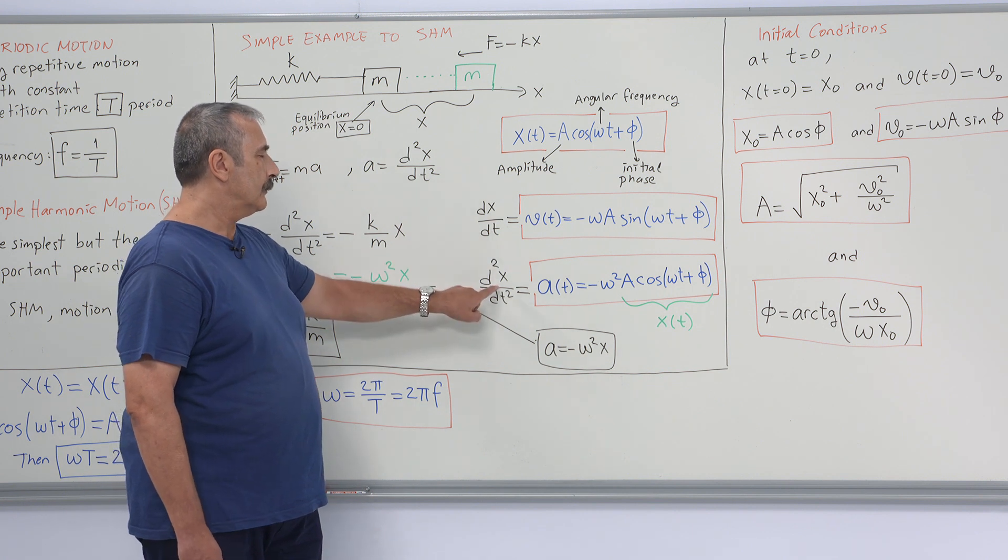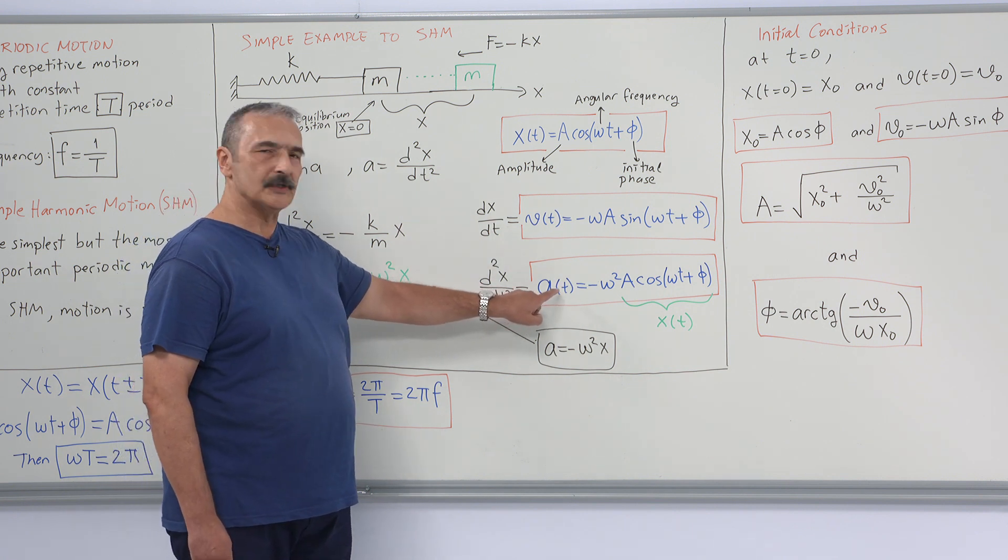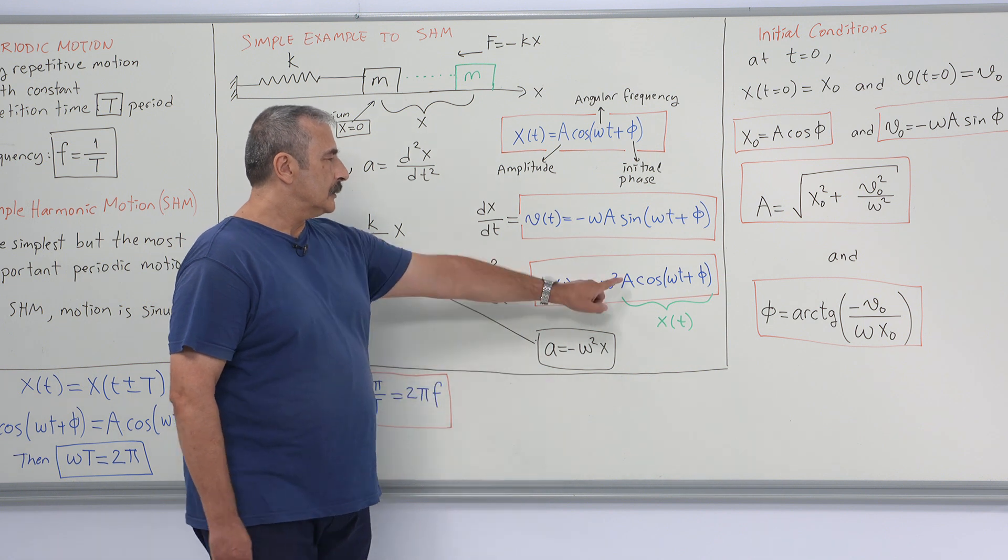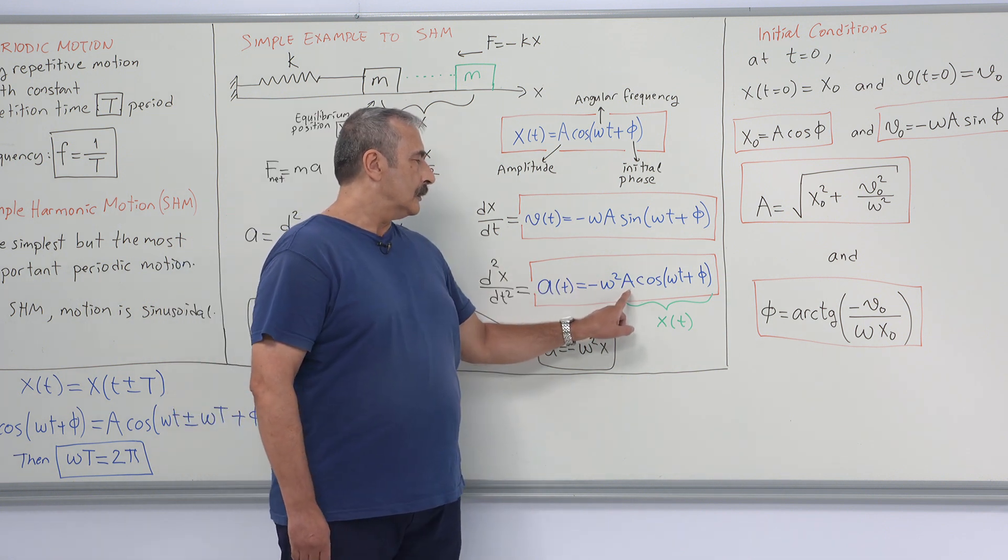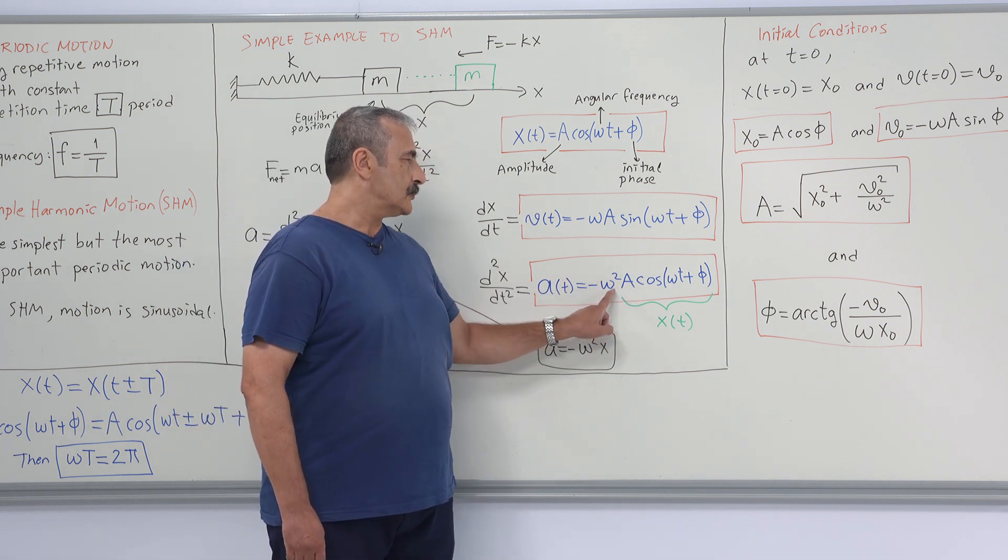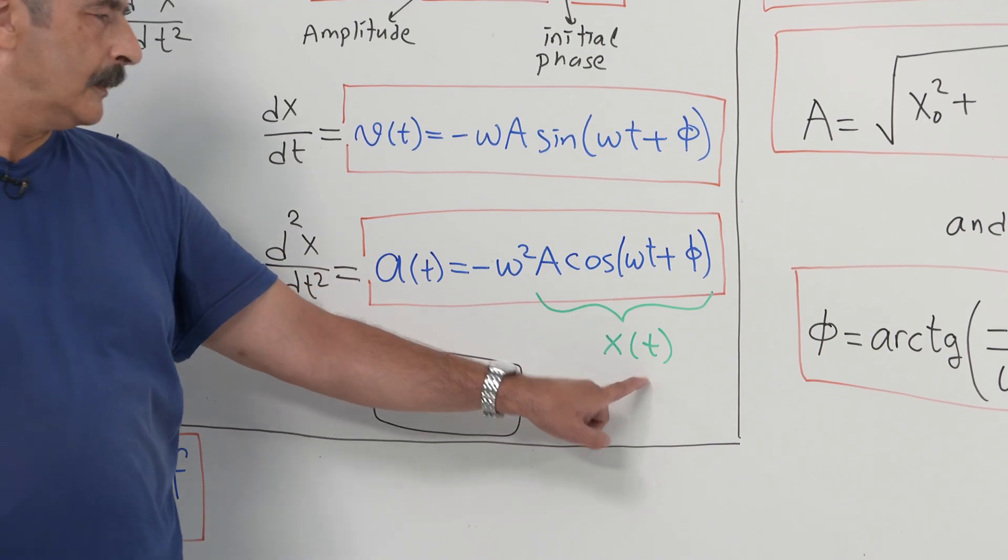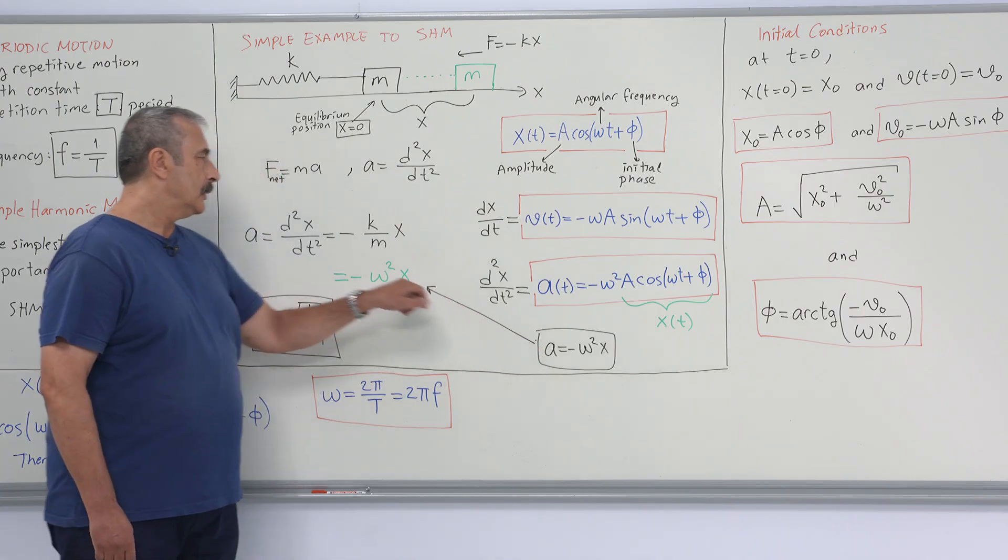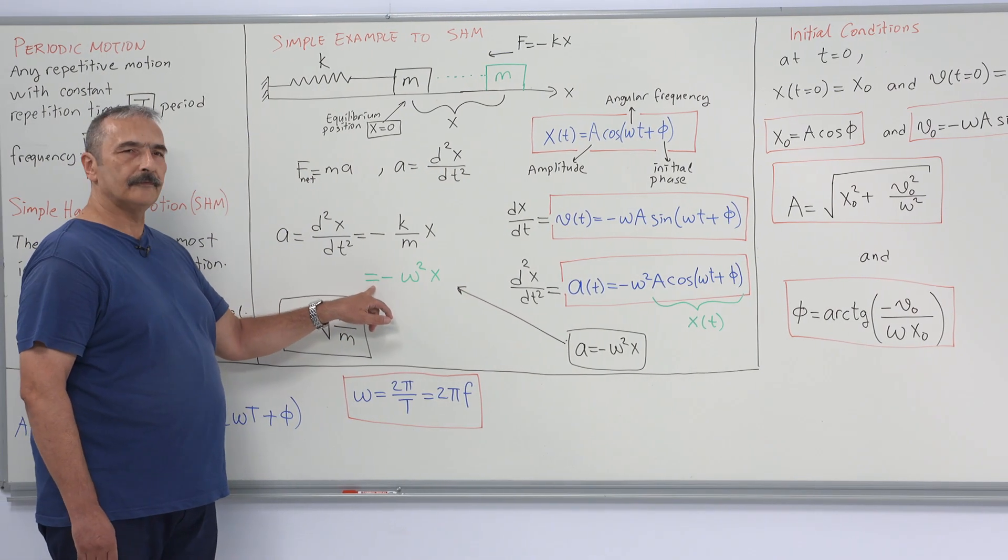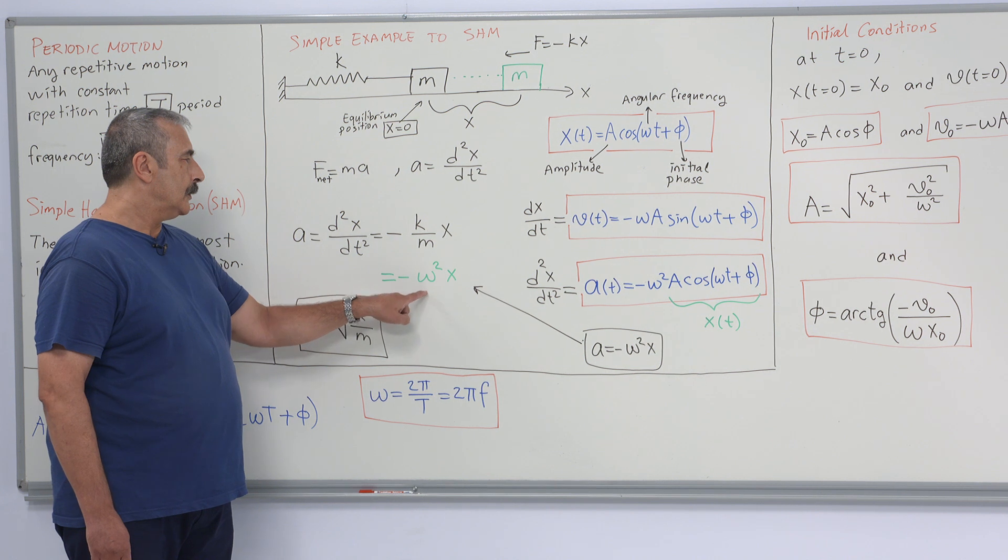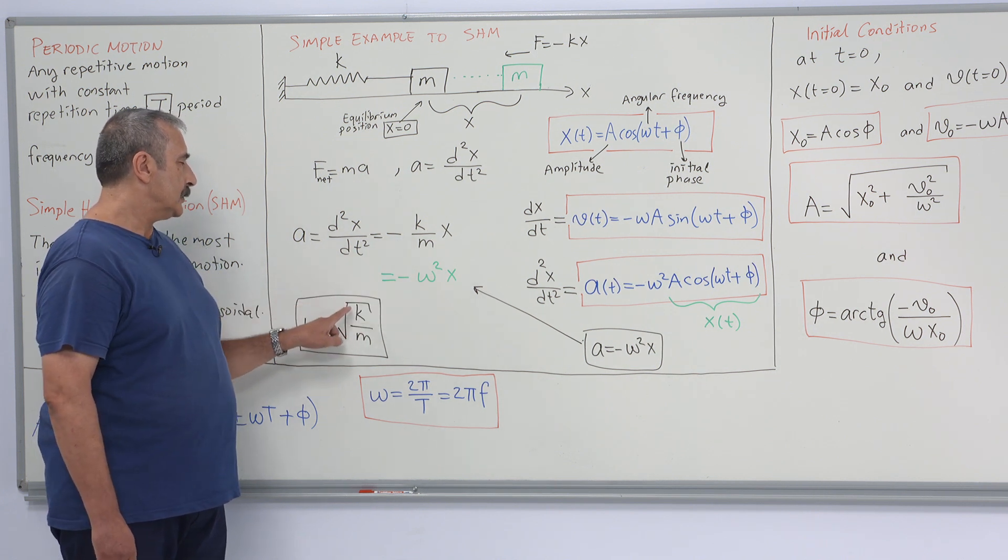Second derivative of the displacement is the acceleration. Here observe that acceleration is minus omega squared times the displacement itself. And inserting this acceleration into the equation of motion back again, we observe that omega is root squared k over m.